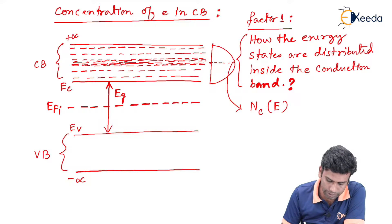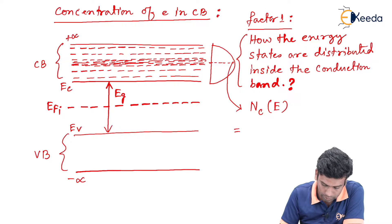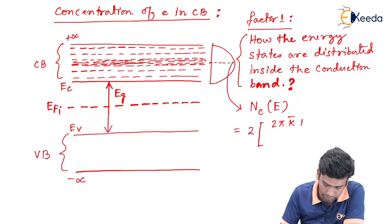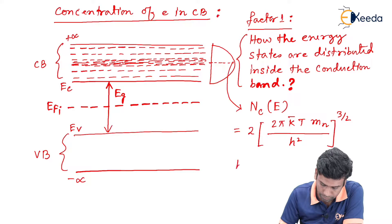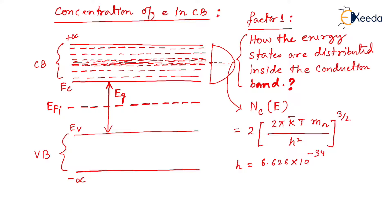Similarly, the same will happen for the valence band. The NCE value is given by the equation: NCE = 2 × (2π × k_B × T × m_n / h²)^(3/2), where h is Planck's constant, equal to 6.626 × 10⁻³⁴ joule-second, and m_n is the effective mass of the electron in the conduction band.